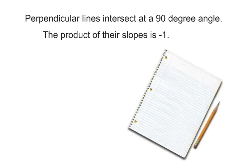Take a minute to write this down in your notebook. It will help you in the next section as we start to work with the equations of lines. Now we know that the product of the slopes of perpendicular lines is negative 1. So because of that, we can say that m1 times m2 is equal to negative 1.